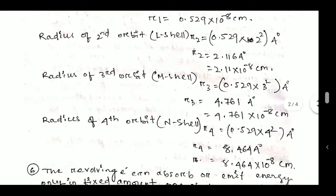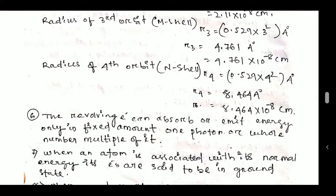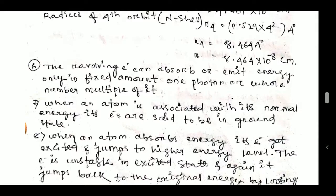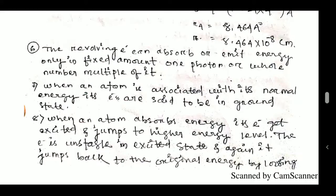The next postulate: A revolving electron can absorb or emit energy only in fixed amounts — that is, one photon or whole-number multiples of it. Whole number means 1, 2, 3, 4, etc., not fractions like 1/2 or 3/2. Electrons absorb or emit energy only in whole-number fixed amounts. When an atom is associated with its normal energy, its electrons are said to be in the ground state.